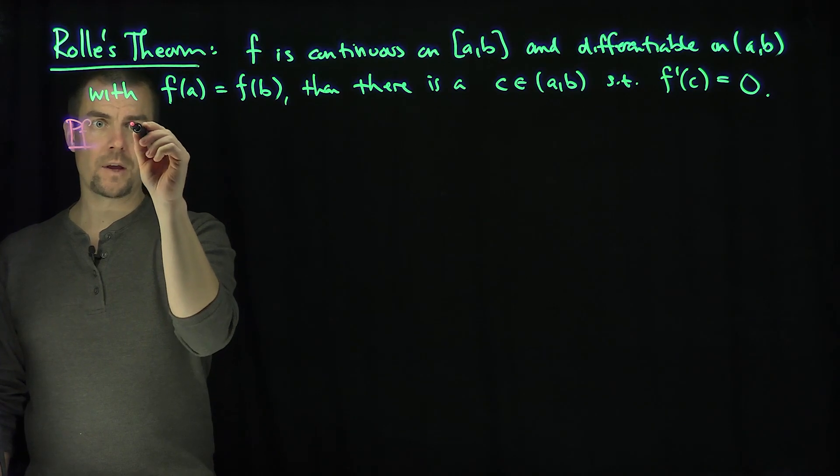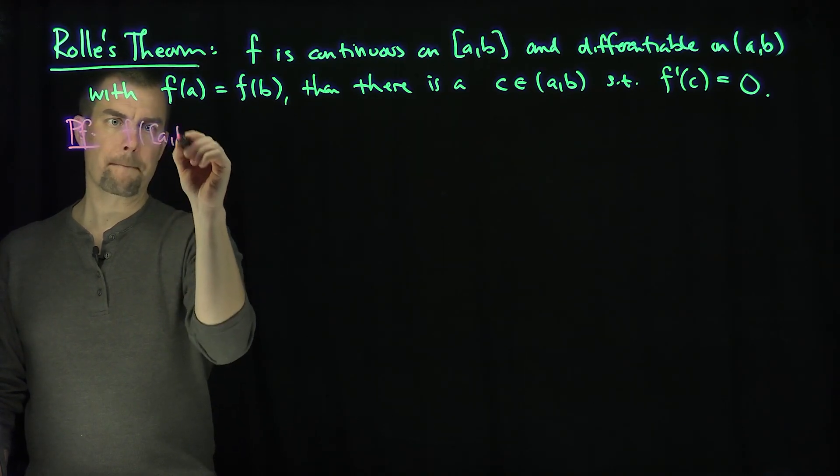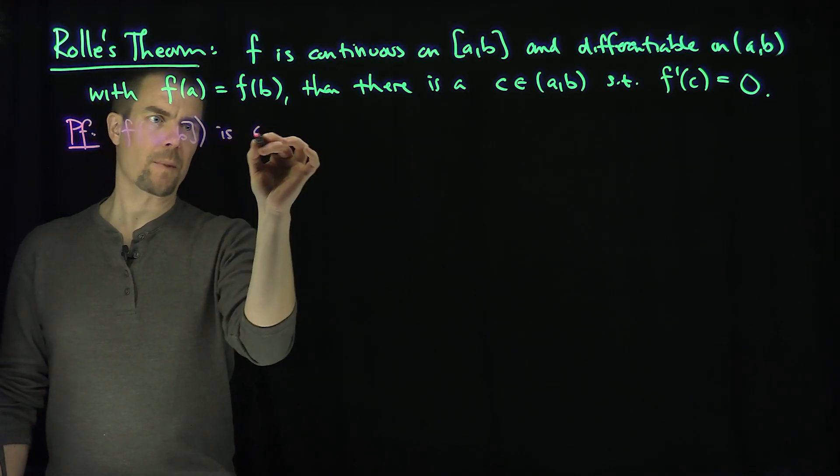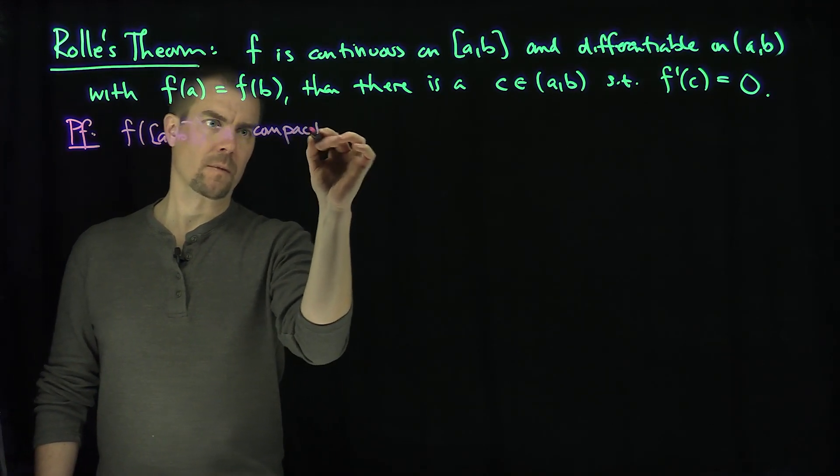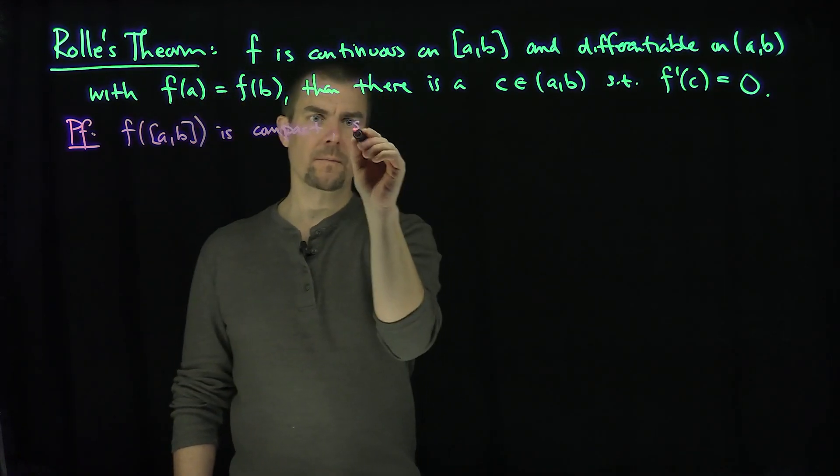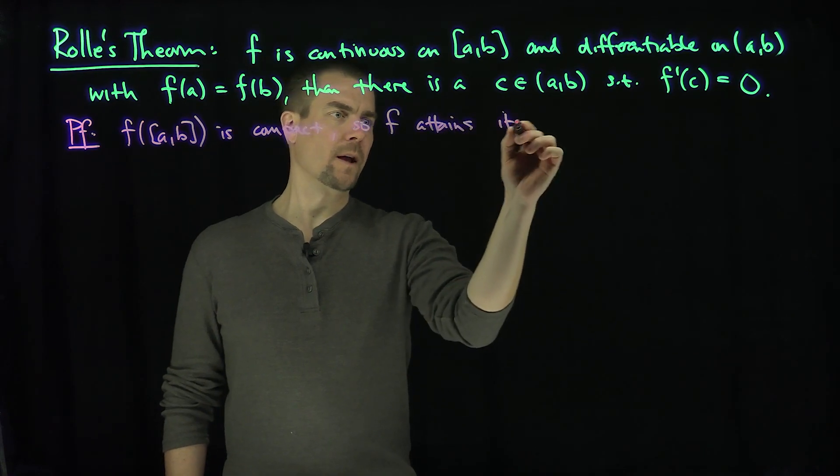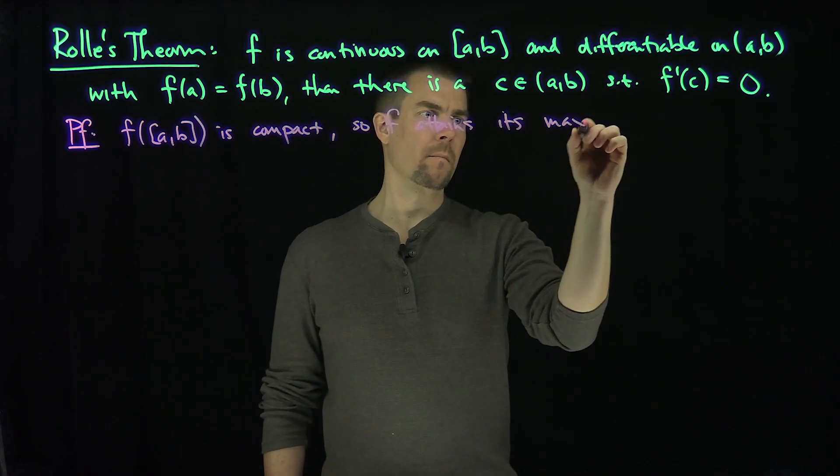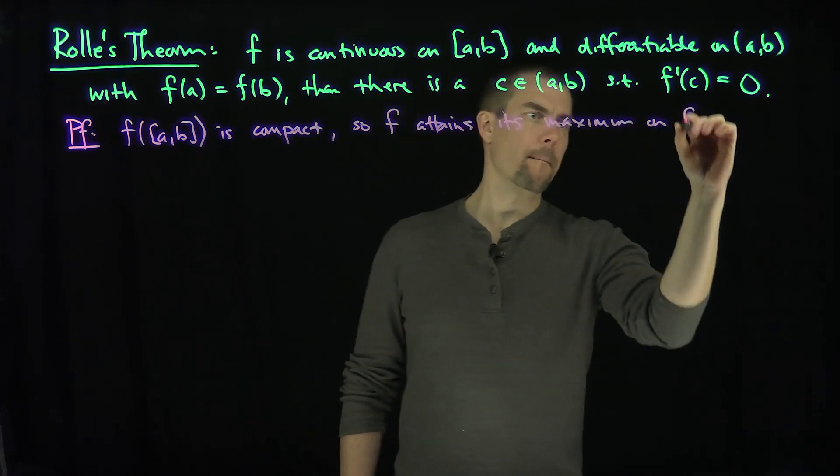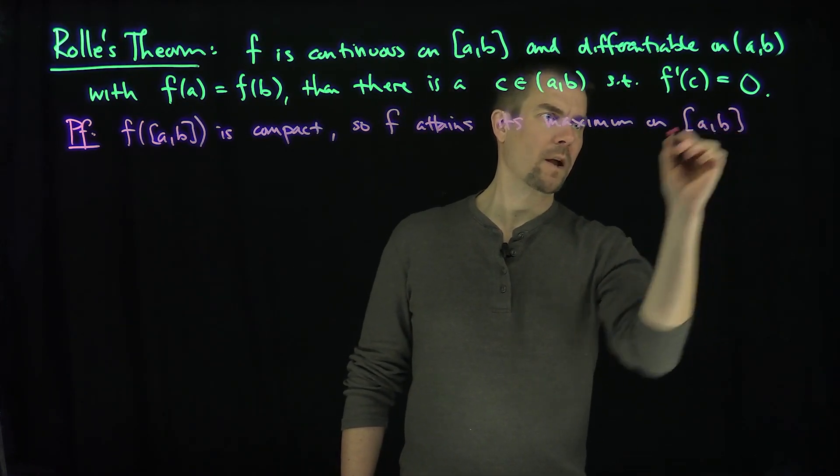Since f is continuous on [a,b], f([a,b]) is compact since [a,b] is compact, so f attains its maximum on [a,b].